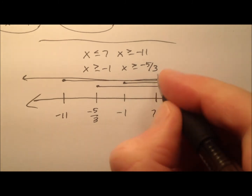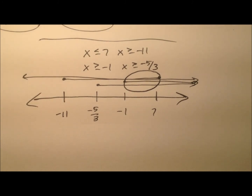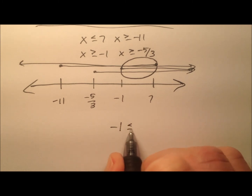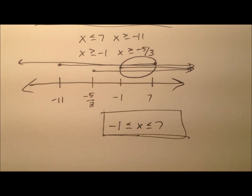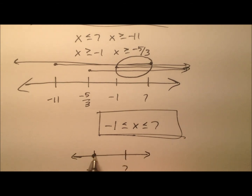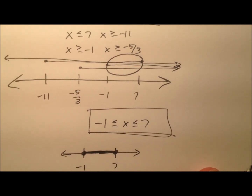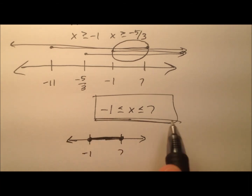So where's the overlap? It looks like all four of them are true right here between negative one and seven. So I could write this as a trichotomy and say negative one is less than or equal to x is less than or equal to seven. And there would be the solution. To graph this, negative one to seven with closed circles, and the solution set is in between these two values.